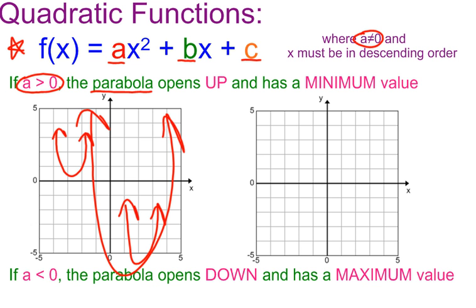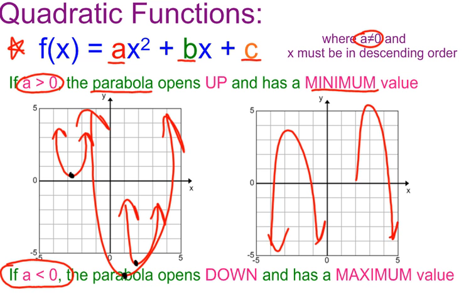The parabola is going up in direction, and it has what's called a minimum value. A minimum value is the lowest point on the parabola. The minimum value also happens to be at the vertex. If A is less than zero, our parabola goes down and has a maximum value — the very highest point — and that's also at the vertex.